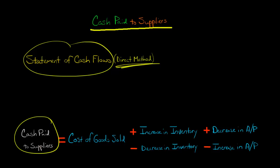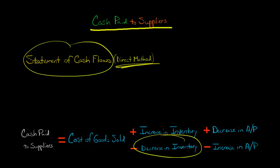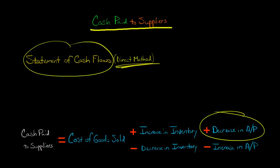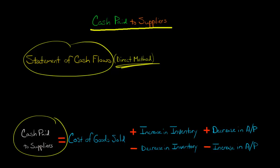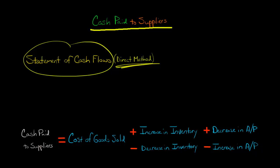Cash paid to suppliers is going to be equal to the company's cost of goods sold, which you would get from the company's income statement. Then we're going to add any increase in inventory, or subtract if there was a decrease in inventory. And then we're going to add if there was a decrease in accounts payable — that means the company's paying off its accounts, so that should increase the cash paid to suppliers — or subtract if there was an increase in accounts payable.